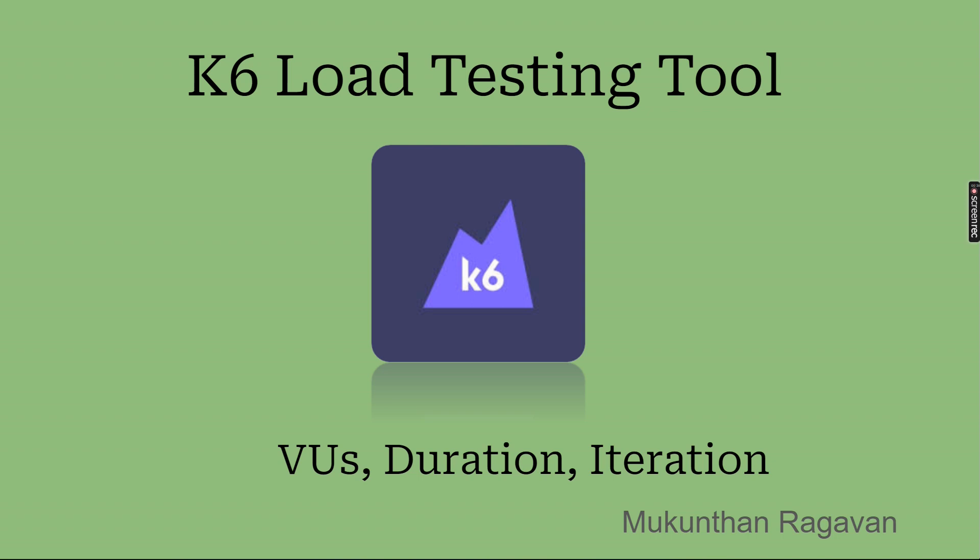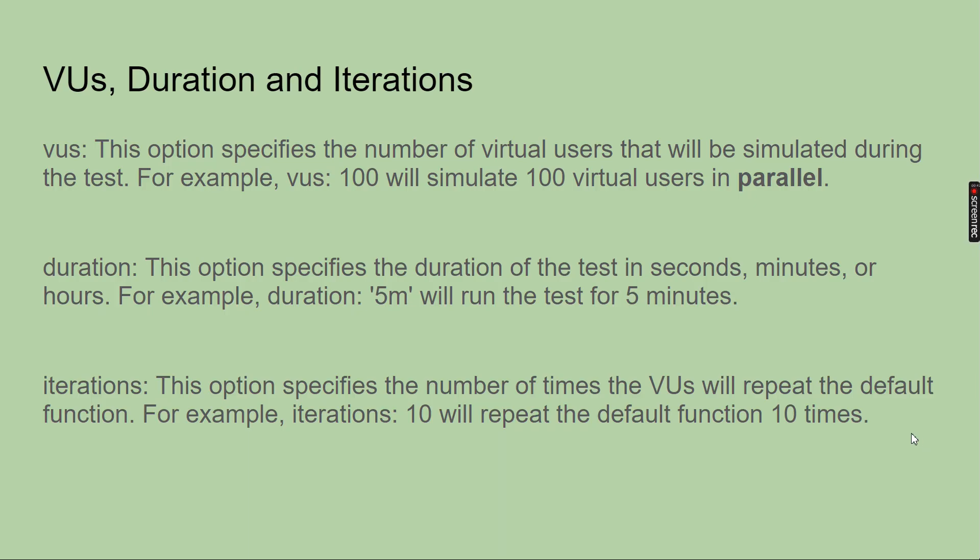In order to understand everything we will start with the basic options which are virtual users, duration and iteration. Virtual user is the number of virtual users that will be simulated during your test. For example, if you have 100 virtual users, that means you are giving 100 virtual users and the application will be taken. And the main catch is here: parallel.